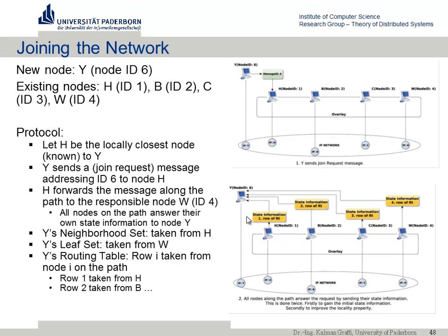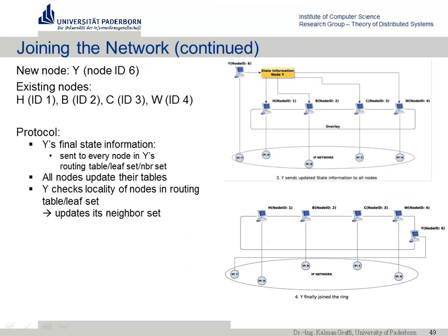The routing table is filled with entries from all the corresponding nodes on the path. Once the node has joined, it also sends its contact information back to the nodes on the joining path, so they can check whether it is a better contact in their routing tables — filling a hole at the corresponding ID. Many nodes are involved in enabling a single node to join, and there is an exchange of routing table information.